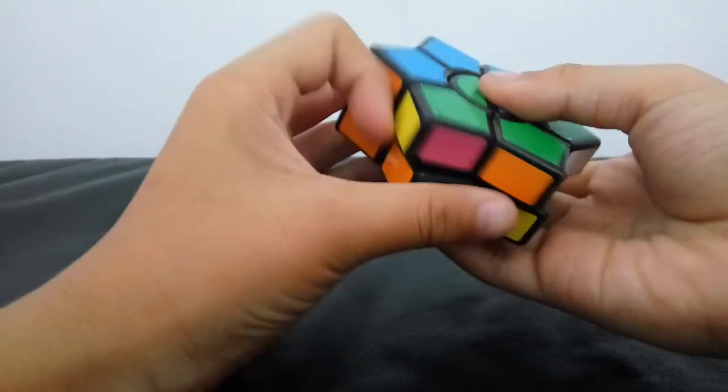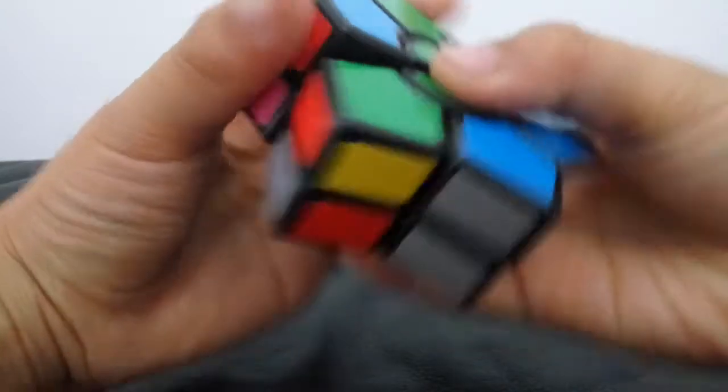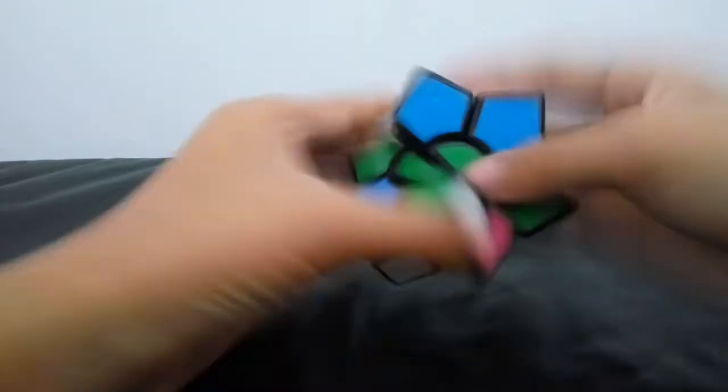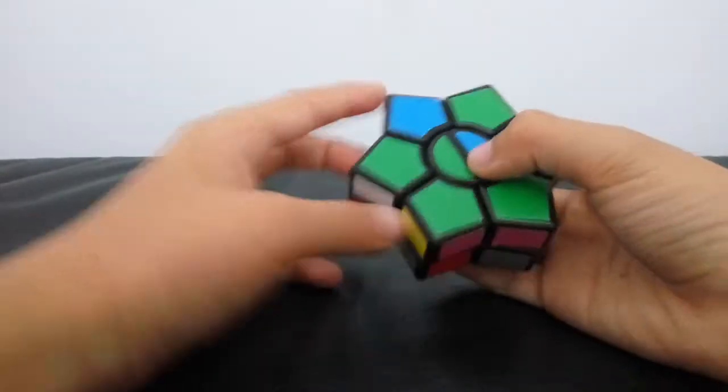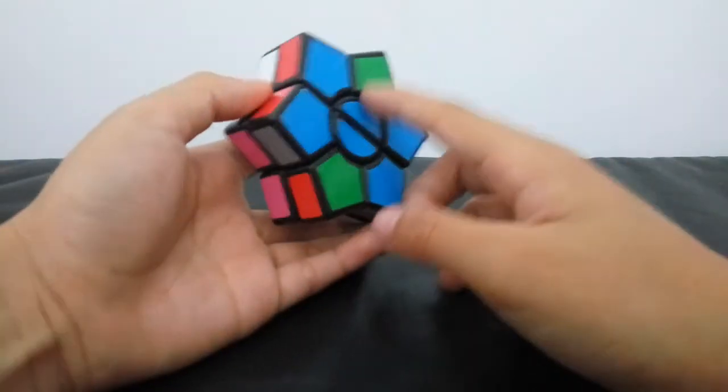Now I'm going to scramble the cube and show you how to solve it. Okay, so now that the cube is scrambled, the first thing we want to do is make one face. If you have this case where you have one just like this, you slide it like that and you flip it over.